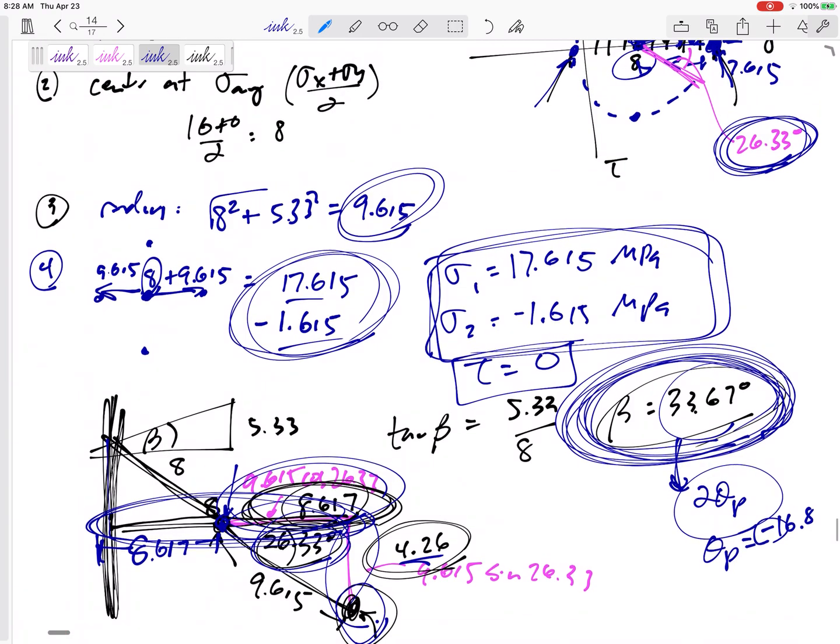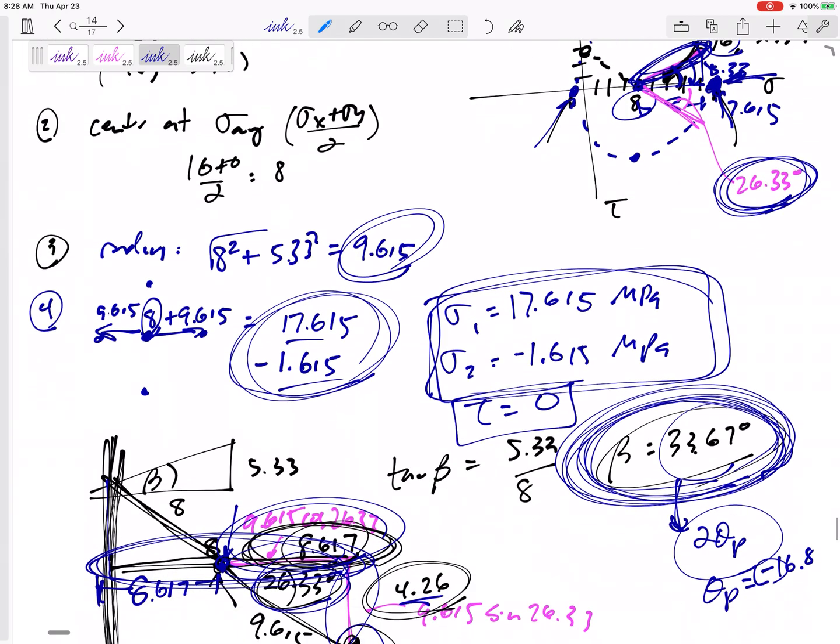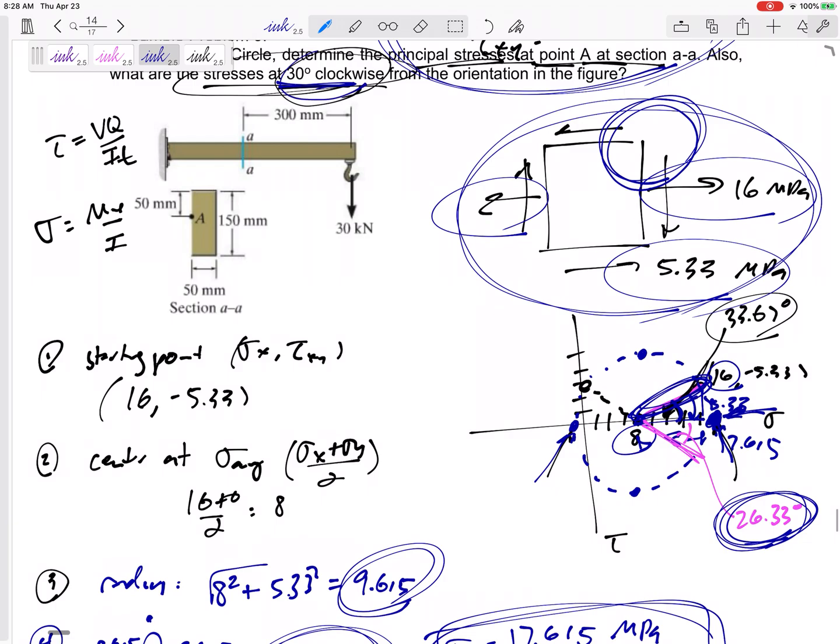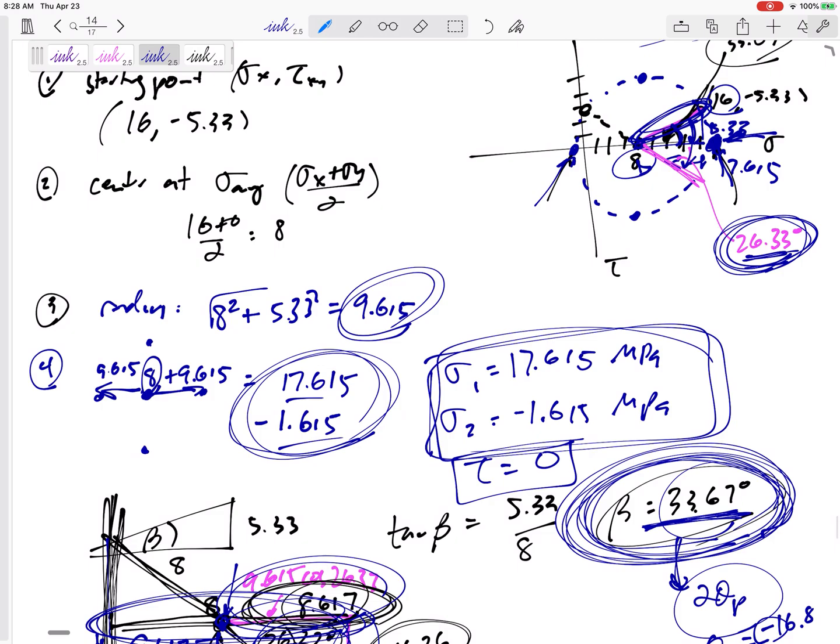Okay. Then another thing I could ask you are, what are the stresses at some angle clockwise or counterclockwise? Well, you got to know where you started on Mohr circle. And remember, you go twice the angle because one degree in real life equals two degrees on Mohr circle. So I knew that I was starting at 33.7, so I went 60 degrees, so I ended at 26.33. Be able to go clockwise, counterclockwise, know where you're starting from, and then rotate two times that angle.